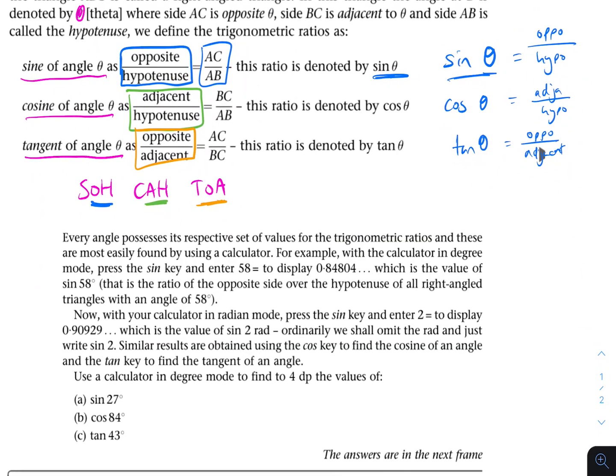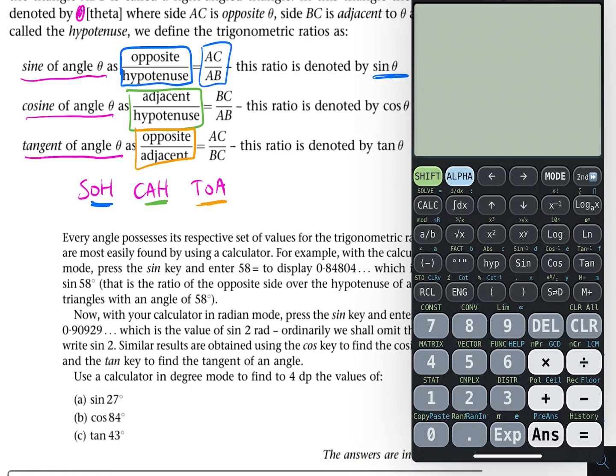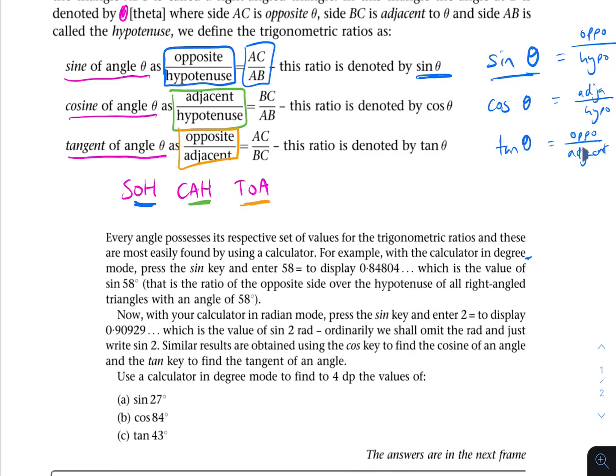So every angle possesses its respective set of values for the trigonometric ratios. And these are most easily found by using a calculator. For example, with the calculator in degree mode, very important. I sometimes put into radians and make a mistake. Press the sine key and enter 58 equals to display 0.84804. So let's do that ourselves. Sine 58. And you can see 0.84804. Just as they said. So which is the value of sine 58.